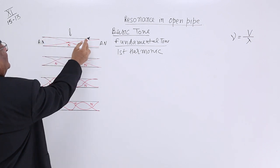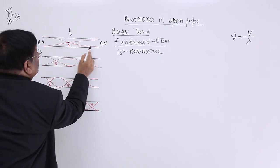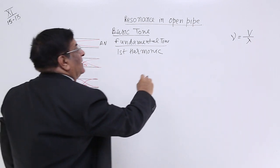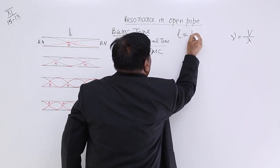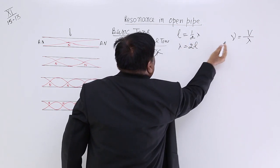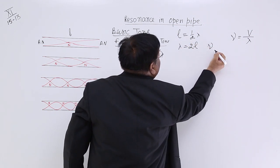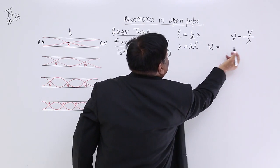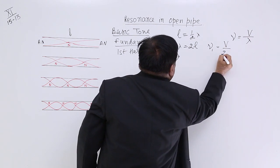If this has got a length L and crest to trough, crest to trough is half lambda. So here L is equal to half lambda. So lambda is equal to 2L. So what is the frequency? This is first frequency, first harmonic and this is equal to V upon 2L.